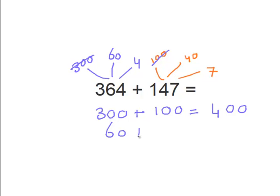And now we do the 60 plus the 40. And we know that equals 100. And now we just have the 4 and the 7. So that equals 11. Okay. So we just add them all up.